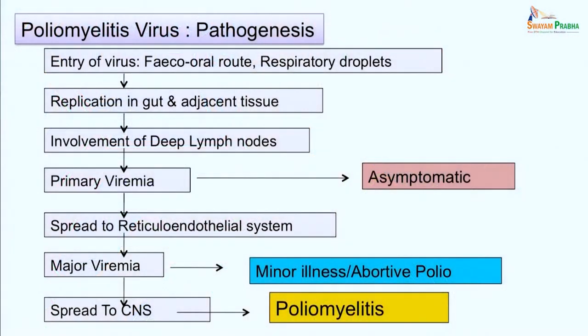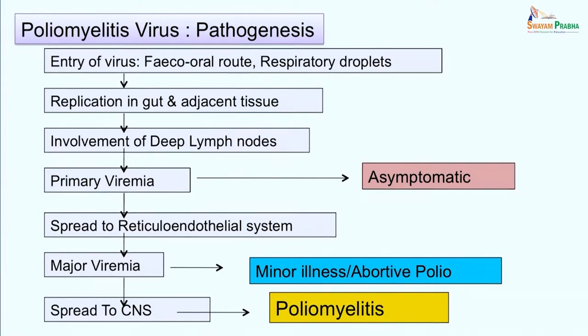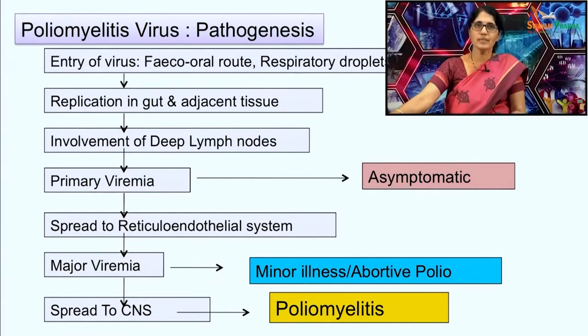The virus enters via the fecal-oral route, and sometimes infection can occur via respiratory droplets. The virus gets attached to host cells by means of an immunoglobulin-like receptor CD155. Attachment of the virus particle to CD155 results in a conformational change in the virus particle that facilitates entry into the cell. The virus multiplies in cells of the intestinal tract — epithelial cells and submucosal lymphoid tissue — as well as in Peyer's patches and tonsils, with involvement of deep lymph nodes.